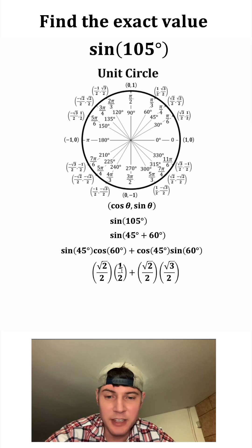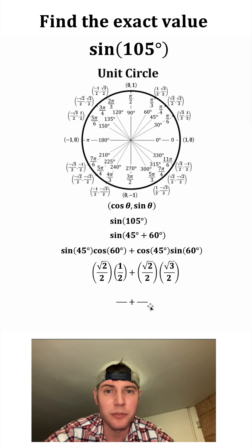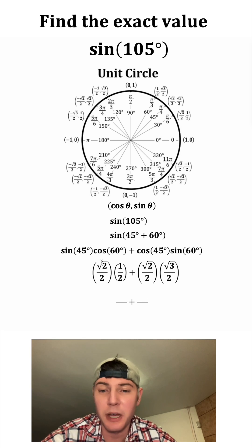And now we can multiply these together. These will multiply to give us a fraction plus a fraction. For the top, we'll multiply root 2 times 1 is root 2, and for the bottom, 2 times 2 is 4. On this side, root 2 times root 3 is root 6, and on the bottom, 2 times 2 is 4.